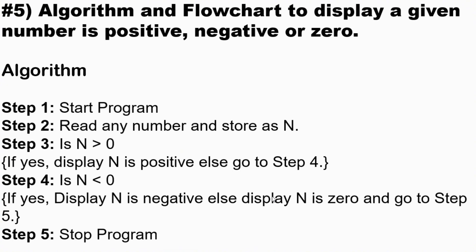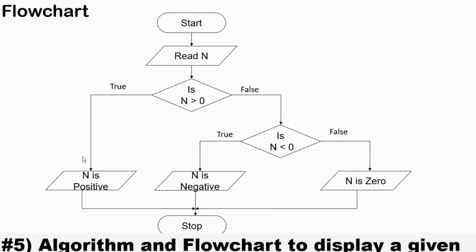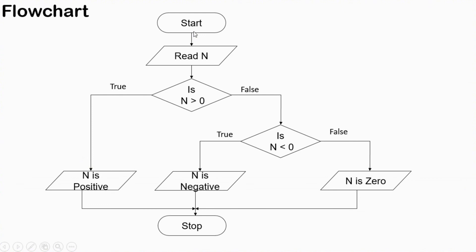In question number five we have an algorithm and flowchart to display whether a given number is positive, negative, or zero. It is a bit complicated but let's start. Step 1: start program. Step 2: read any number and store as N. Step 3: is N greater than or equal to zero? If yes, display 'N is positive'; else go to step four. Step 4: is N less than zero? If yes, display 'N is negative'; else display 'N is zero'. Go to step five. Step 5: stop program.